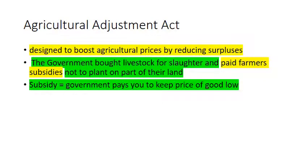The Agricultural Adjustment Act addressed the farming sector, which was struggling greatly from overproduction and lack of demand. It was a very controversial New Deal program designed to boost agricultural prices by reducing surpluses. Every fourth plot of land was tilled up to reduce supply, therefore boosting demand. The government bought livestock for slaughter and paid farmers not to plant.